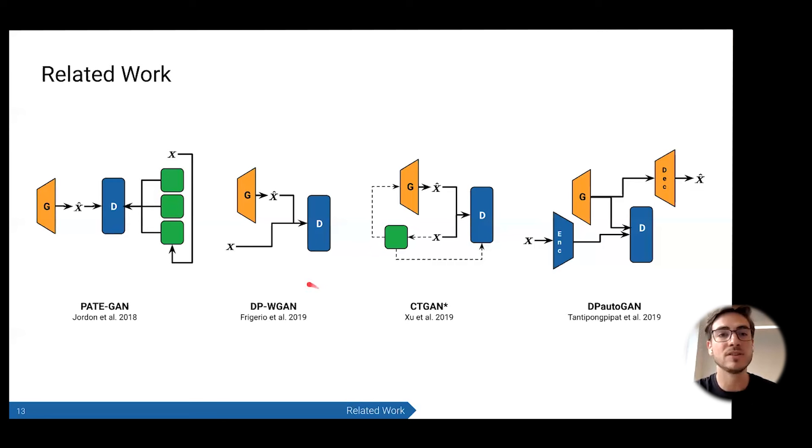DPWGAN is a Wasserstein GAN, so it uses Earth Mover distance to help stabilize that GAN training process, and it just applies differential privacy to that. So quite a nice, simple version of just a privatized GAN that we can compare against. CTGAN is a conditional tabular GAN. It's optimized for this mixed type tabular data, but it also uses conditional sampling. This is actually the state of the art in using GANs to synthesize tabular data, but it isn't privatized.